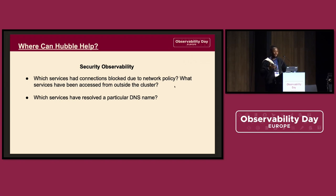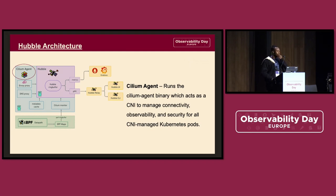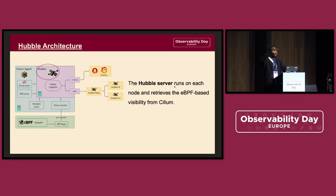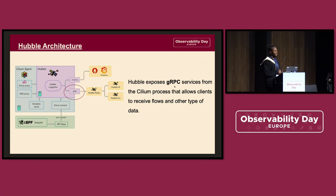Hubble has a really interesting architecture that consists of several things. One interesting part is the Cilium agent. Hubble runs alongside the Cilium agent, which acts as a CNI to manage connectivity for all Cilium-managed Kubernetes pods. For every single pod you have running, Hubble can get a lot of information from the Cilium agent already running in those pods. Then the Hubble server, which runs on each of your nodes in your cluster, retrieves the eBPF-based visibility from Cilium. This is where the engine takes all those eBPF metrics and gives you visibility. Then Cilium exposes gRPC services from the Cilium process that allow clients to receive flows and other types of data.